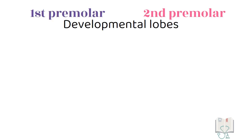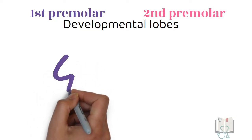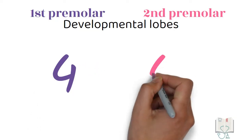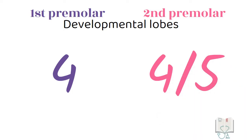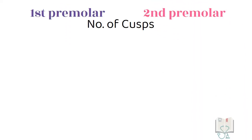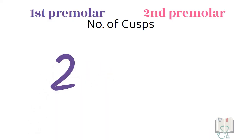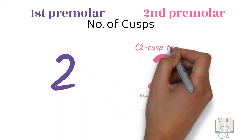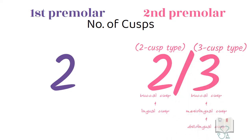Regarding development, the first premolar develops from four developmental lobes, but the second premolar may develop from four or five developmental lobes. This leads to variations in the number of cusps. In the first premolar, there are two cusps, but in the second premolar, there are two cusps in the two-cusp type and three cusps in the three-cusp type.